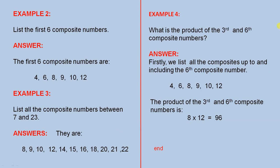Example 4: What is the product of the third and sixth composite numbers? Firstly, we list all the composites up to and including the sixth composite number. The product of the third and sixth composite number — the third is eight and the sixth is twelve — eight times twelve is ninety-six.